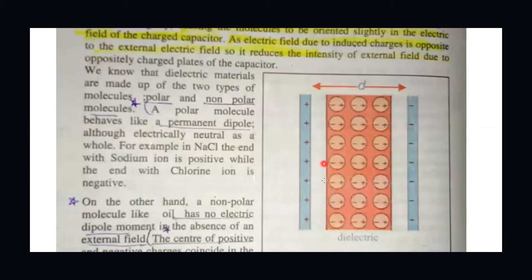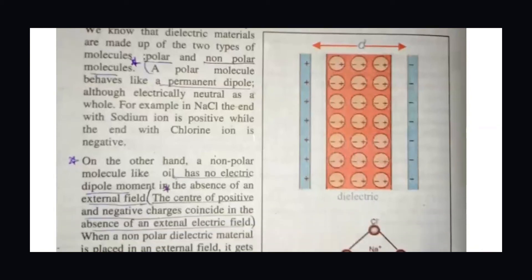The important point is that dielectrics are of two types: polar and non-polar. Polar dielectrics have a permanent dipole, meaning they have positive and negative charges separated — like sodium chloride, which has positive sodium and negative chlorine. This is always a permanent pole. Non-polar dielectrics, such as oil, in the absence of an external electric field have no net charge separation.